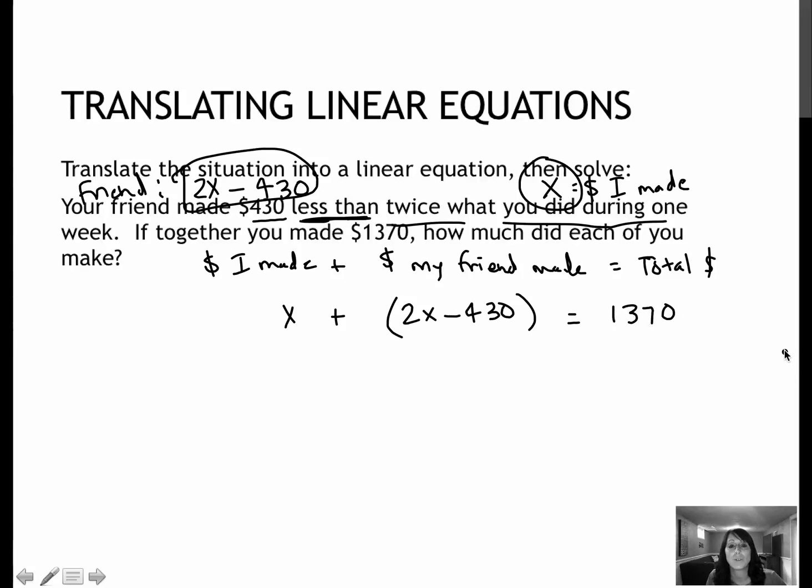Now I'm just going to solve because this is a nice equation. So x plus 2x, this is in parentheses. I did that because sometimes this is going to be a subtraction, in which case we would be very careful. This is addition, so really this is just x plus 2x minus 430 equals 1370. I'm going to combine those two to get 3x minus 430 equals 1370.